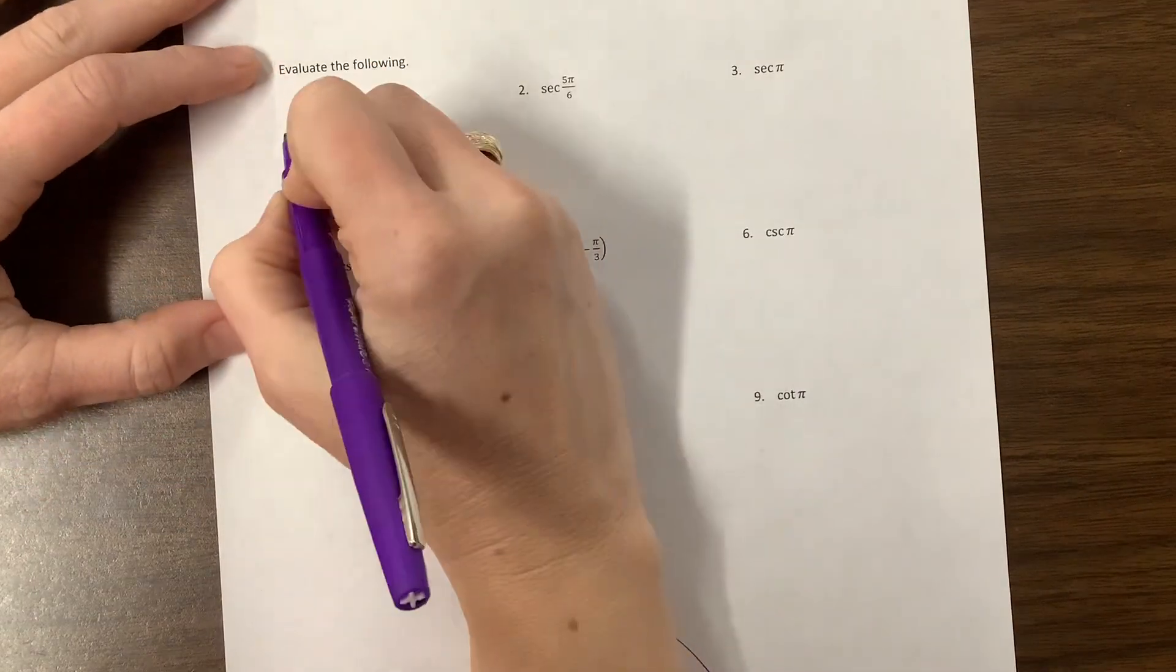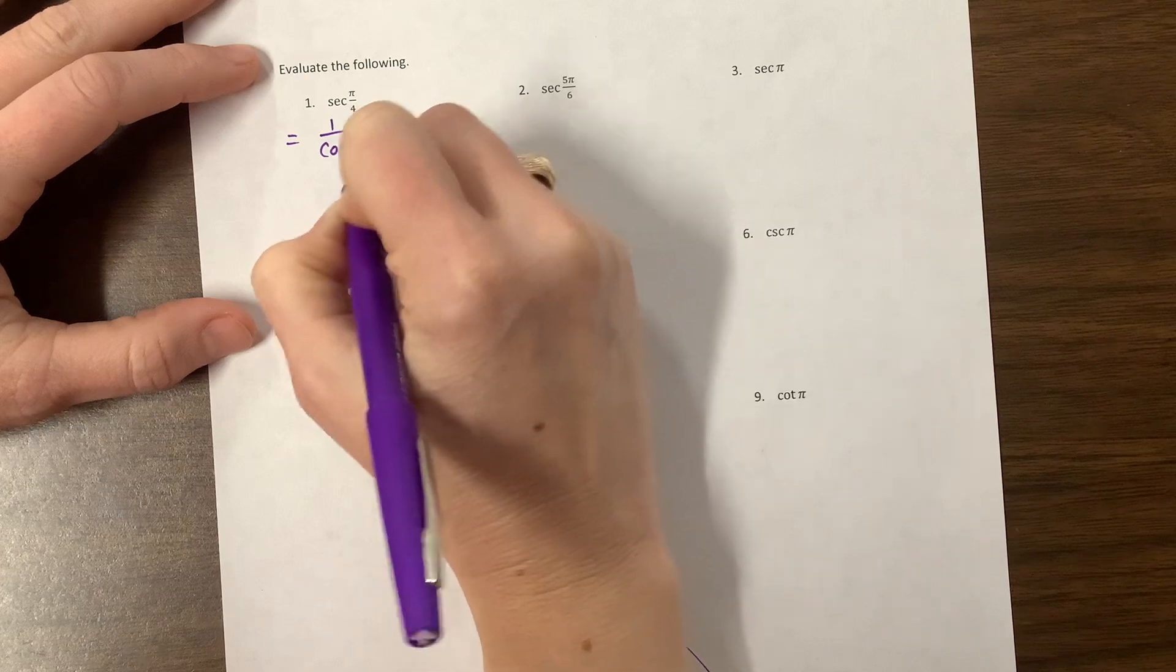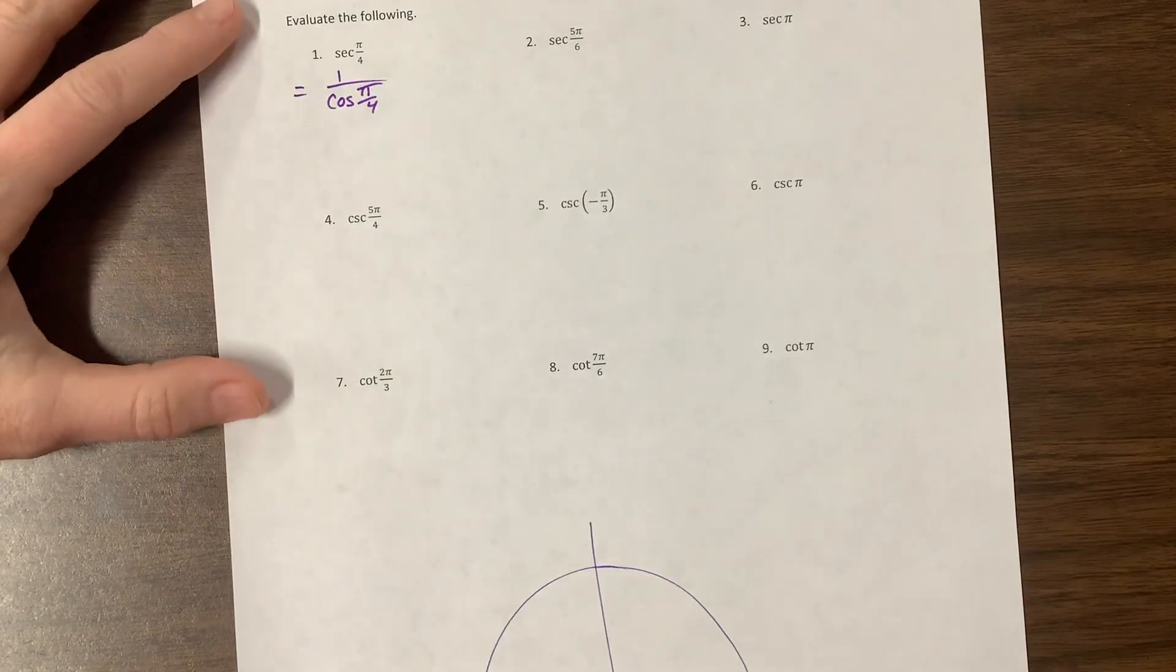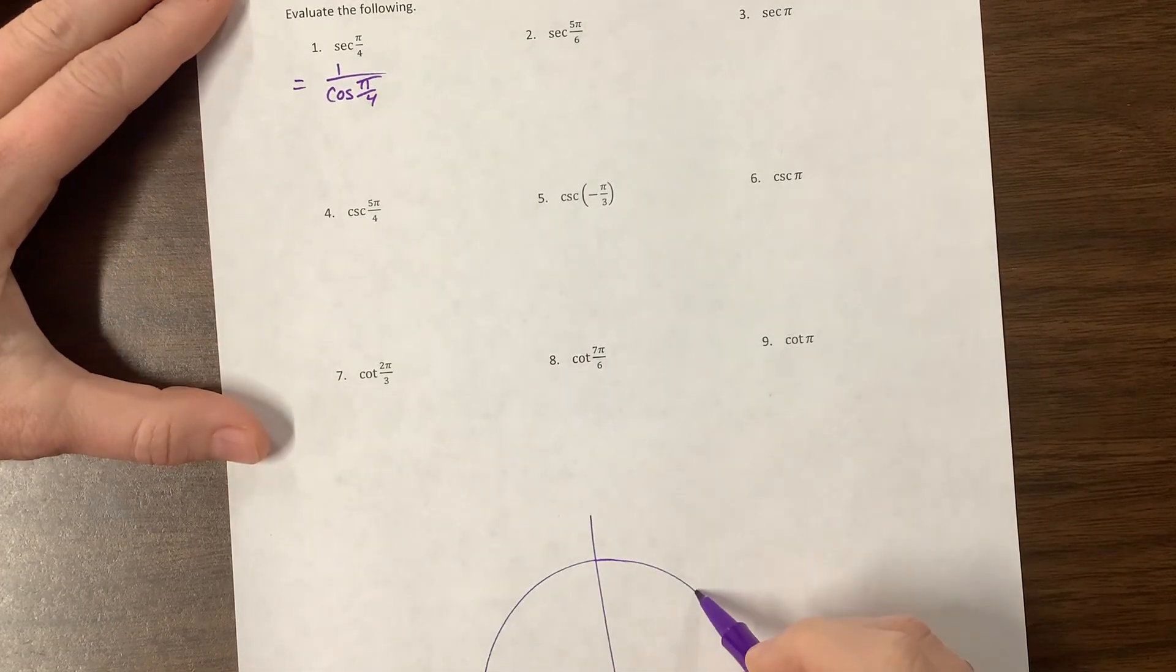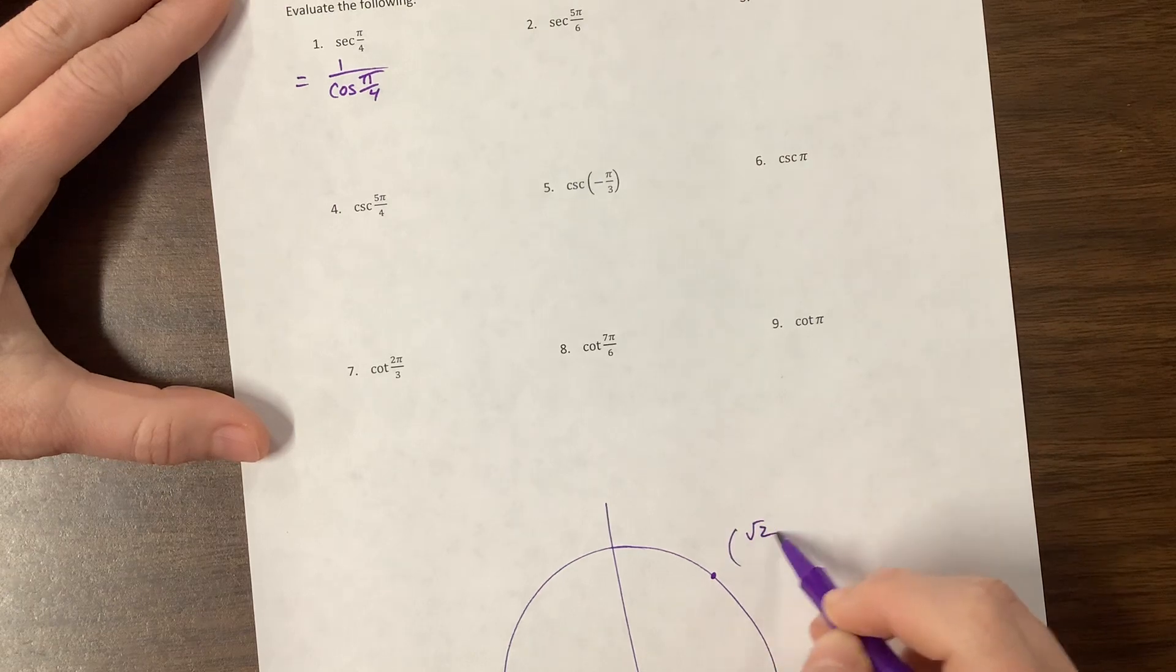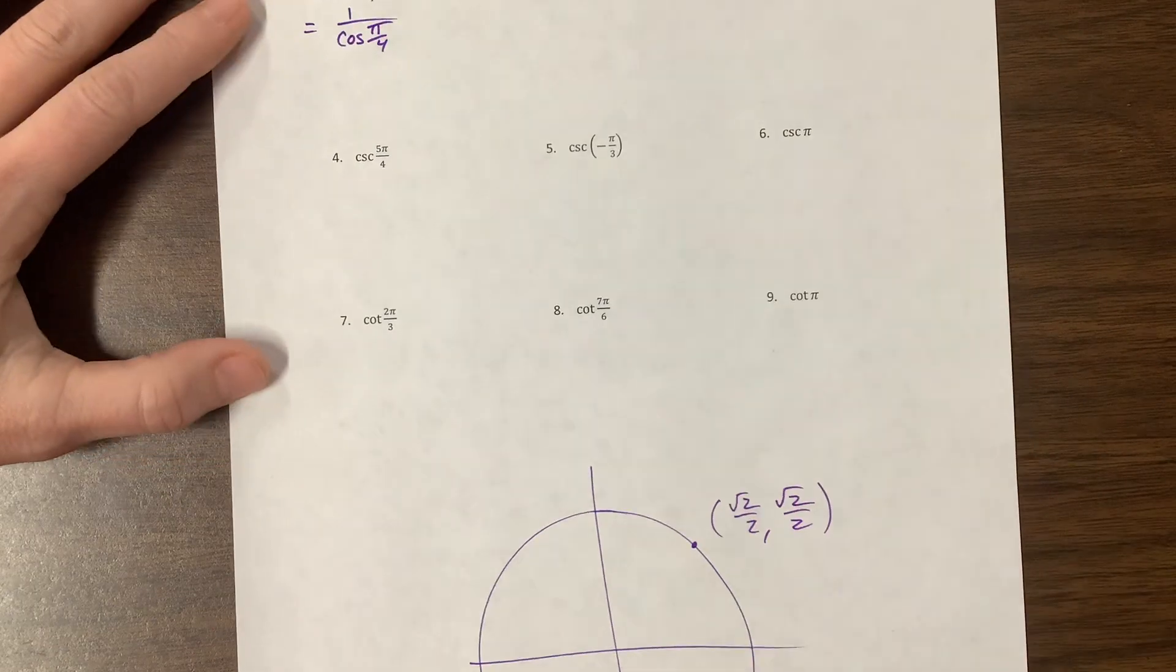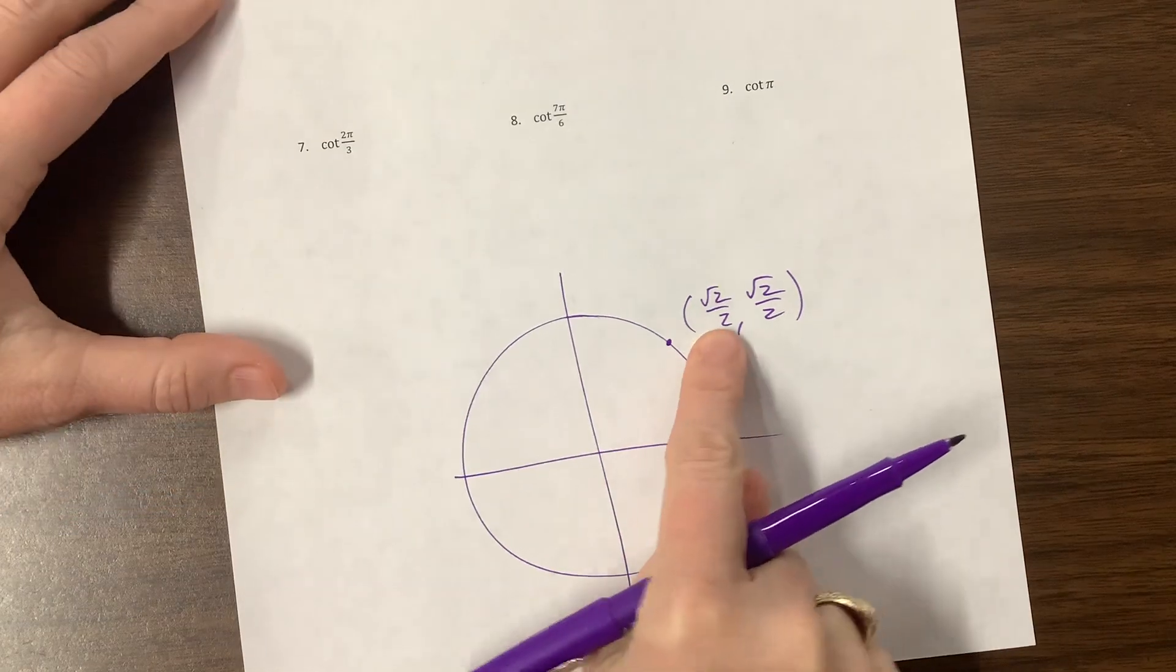Well, secant is equal to 1 over cosine of, well, whatever that angle was, that angle was pi over 4. Cosine of pi over 4, that's right here. These have the coordinates root 2 over 2, comma root 2 over 2. And so cosine is the x value.